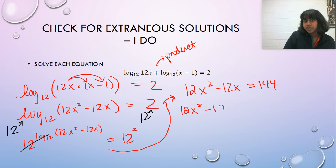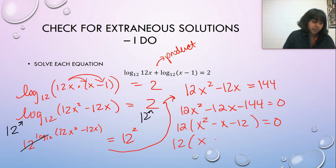If I bring that over, I end up with a quadratic formula and I can actually factor out a 12 if I wanted to. It might make my life easier. So I'm going to go ahead and do that. So my answers are X equals four and negative three.